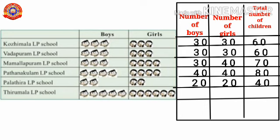At last, Tirumala LP school. In Tirumala LP school, 50 boys and 60 girls are there. The total number of children in Tirumala LP school is 50 plus 60 equals 110.